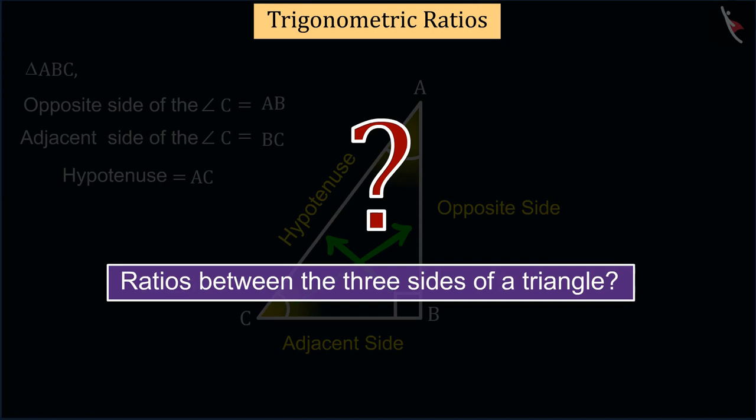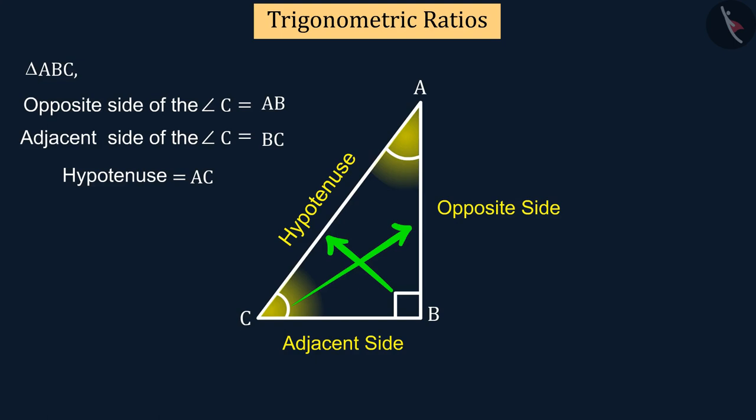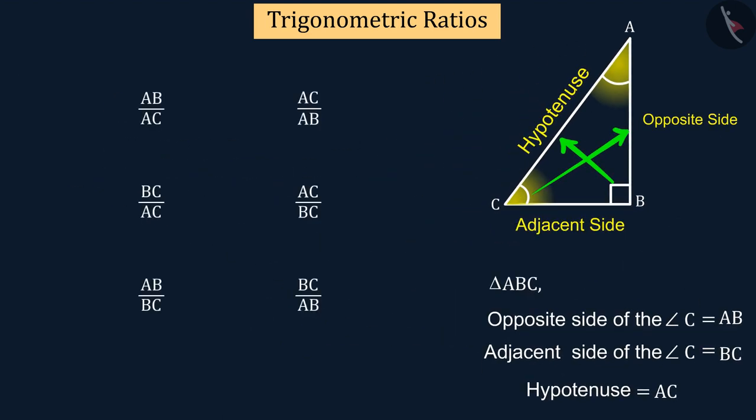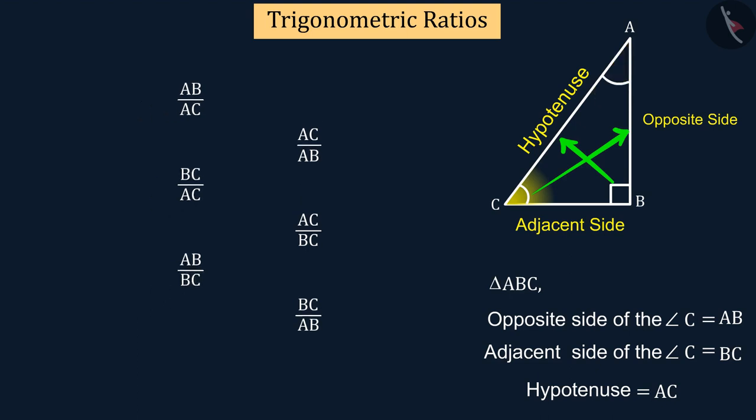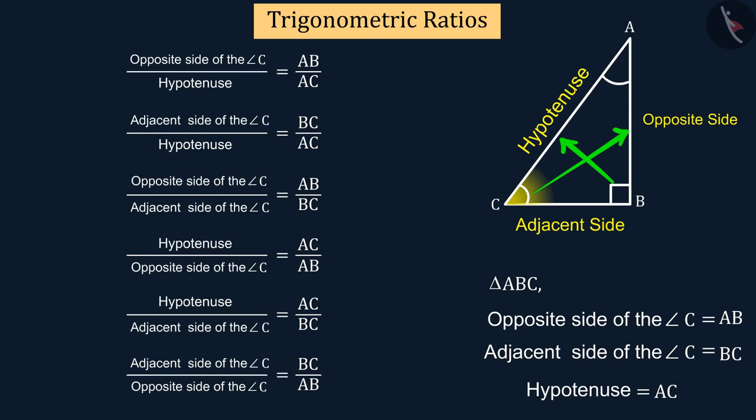How many ratios can be found if you calculate different combinations of ratios between the three sides of a triangle? Let's see. Now if we write the ratio between the given sides, then we get these six ratios.